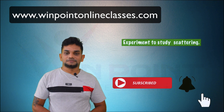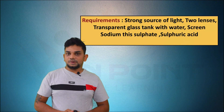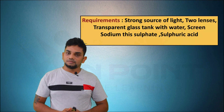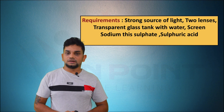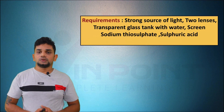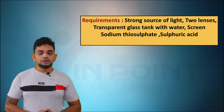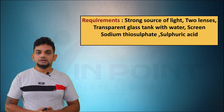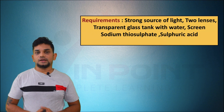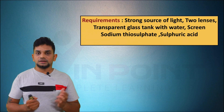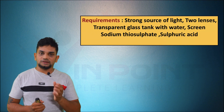For every experiment we need some materials. The requirements are: a strong source of light, two lenses, a transparent glass tank with water, a screen, sodium thiosulphate, and sulfuric acid. These are the things we need for this experiment.